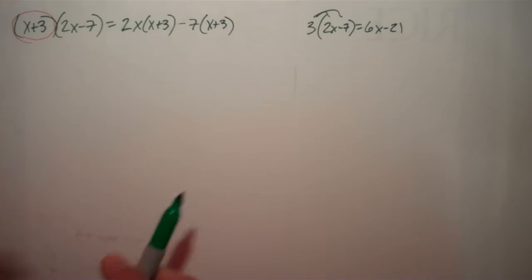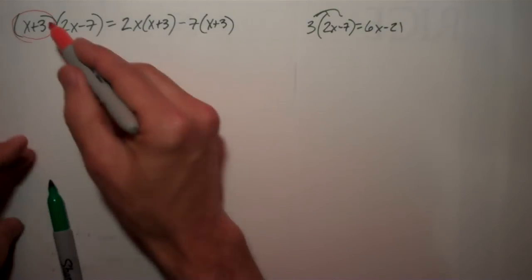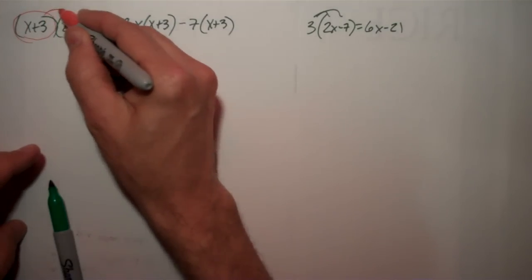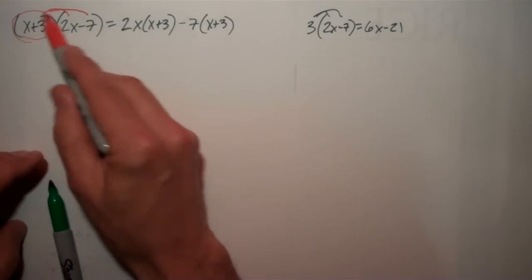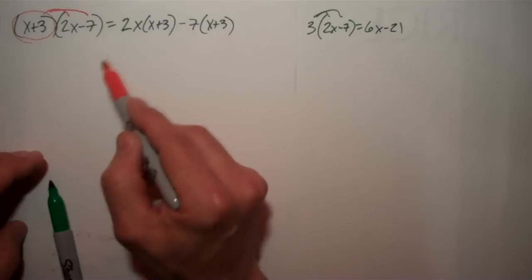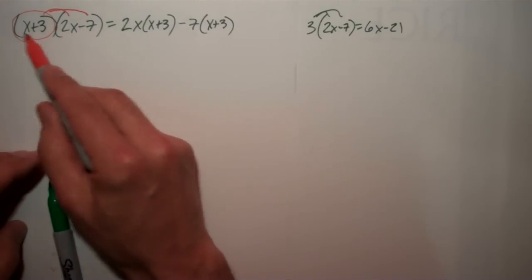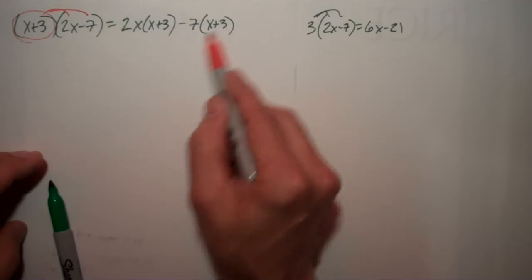Okay, you see what I did? I took this binomial here, and I just distributed across the other one. I said it's going to be x plus 3 times 2x, that right there, minus x plus 3 times 7, that right there.